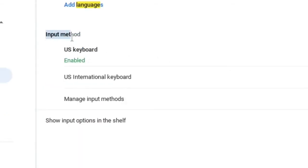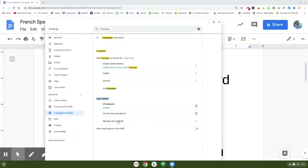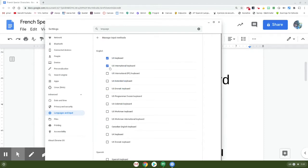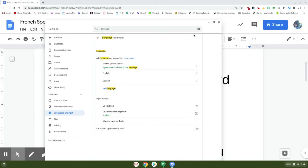And then down here where it says input method, I want to enable the US international keyboard. If it's not popping up right there, click manage input methods and you can find it in there. So I'm going to enable that and you can just close this box out.